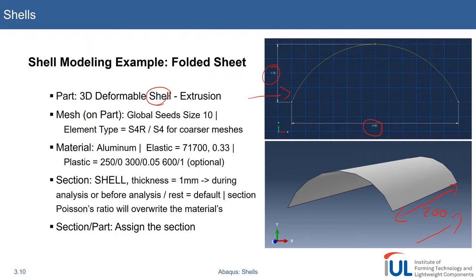As in the previous tutorials, we use a global seed size of 10 and maybe start with S4R and S4 elements, depending on if we further coarsen the mesh or not. We can start with the comparison of these two element types and run two jobs to see the differences.